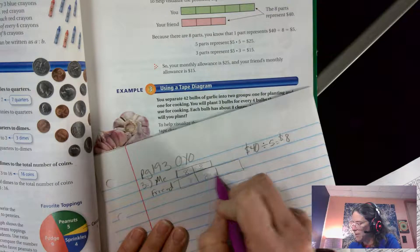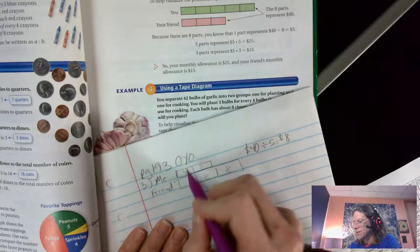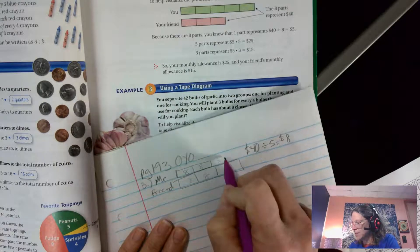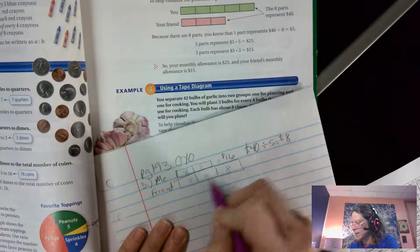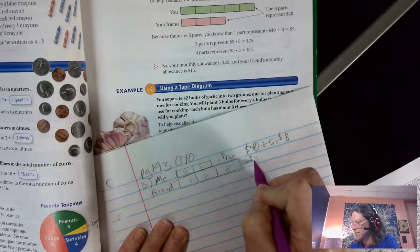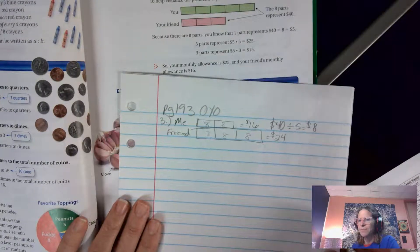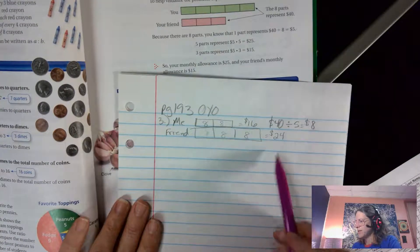So I have two sections, each is worth eight dollars. Eight times two is sixteen dollars. Eight times three is twenty-four. If I add sixteen and twenty-four I get forty. That's how I know that I'm right. So I get sixteen dollars, my friend gets twenty-four.